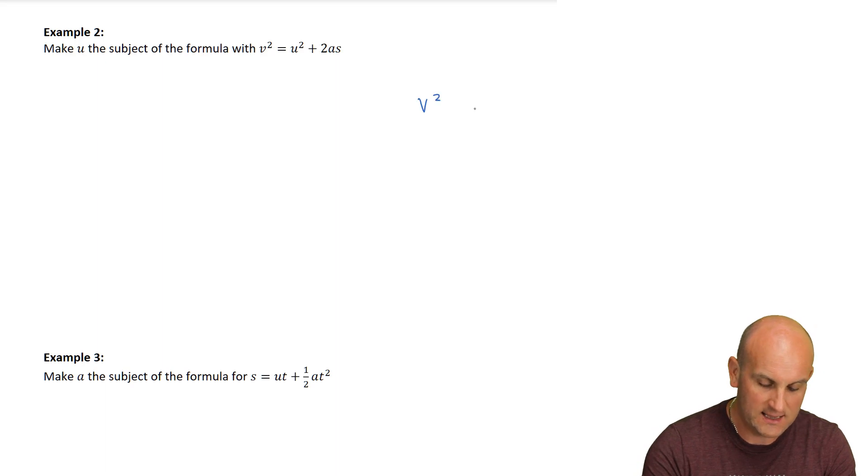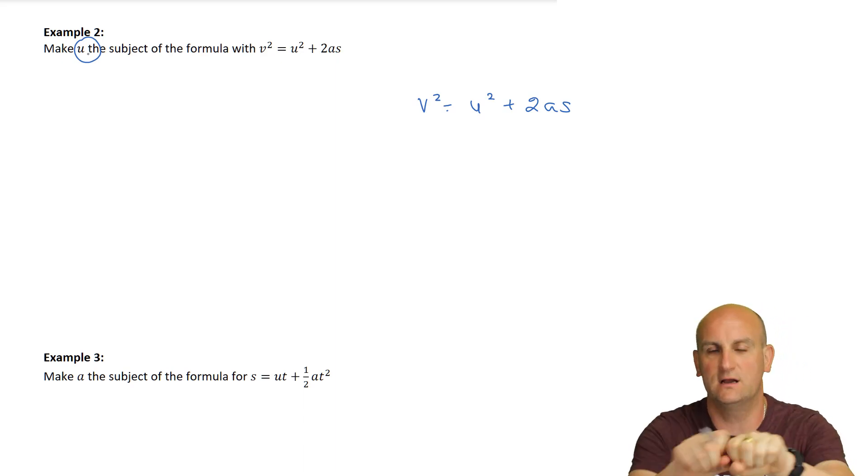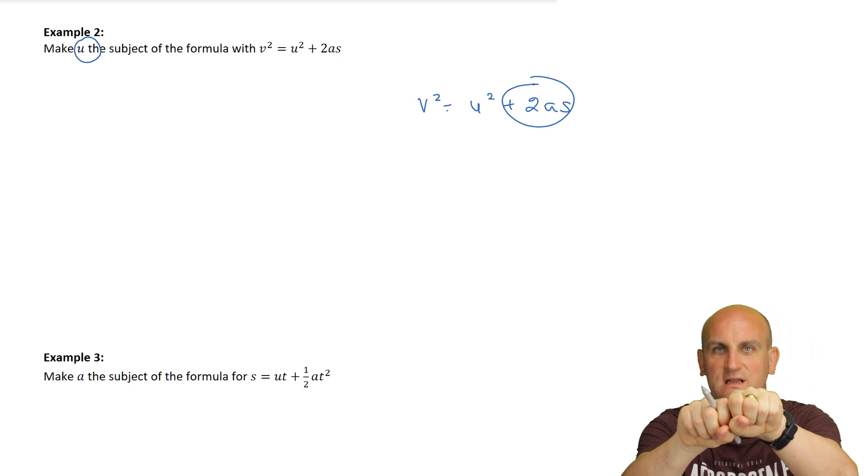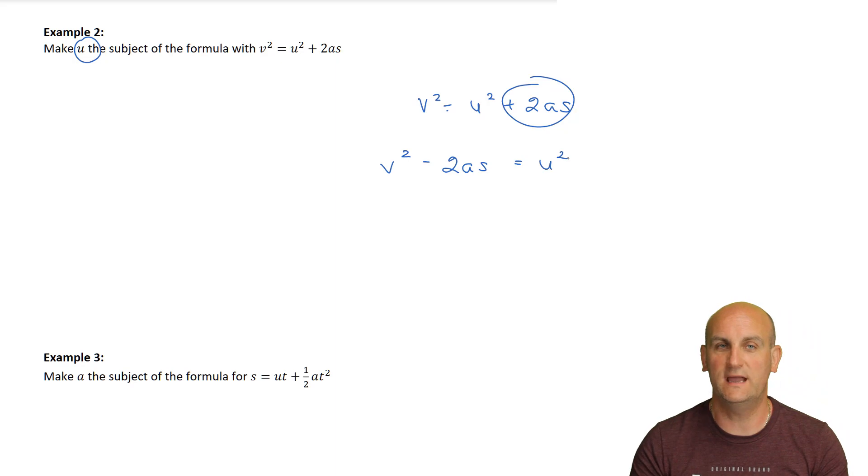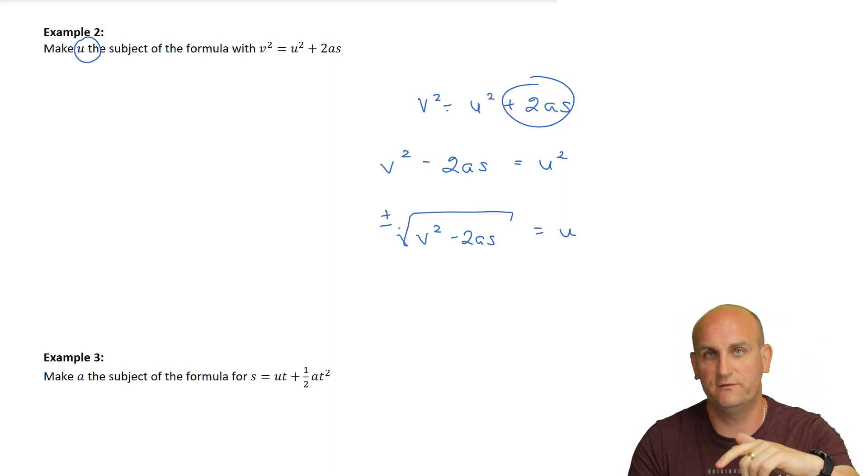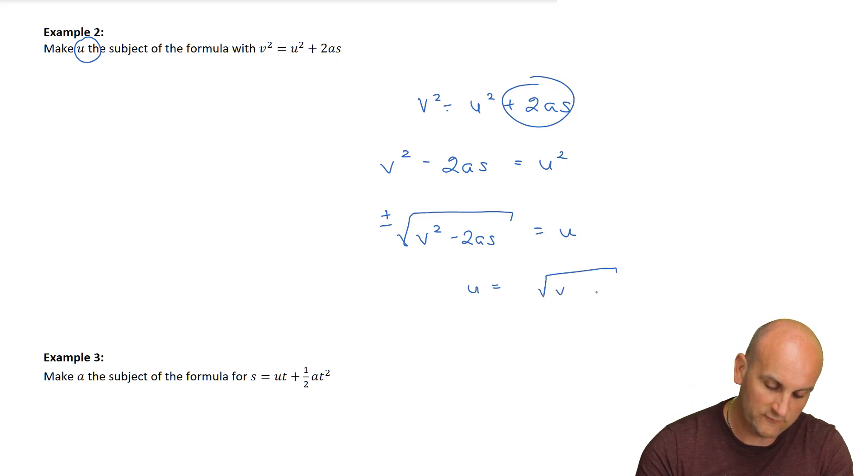Example two, we've got V squared is equal to U squared plus 2 AS. And what does it want? It wants to make U the subject of the formula. Right. Well, there's nothing really stuck to the U other than that squared sign. So what am I going to do? I'm going to have to move the plus 2 AS. Well, they're all times together so I can move them all together and I'm going to subtract 2 AS from both sides. So we get V squared minus 2 AS is equal to U squared. How do I undo a square? A square root. So I now get the square root of V squared minus 2 AS is equal to U. But word of warning, you have to put the positive and negative because when you square root something, there can be a positive solution and there can be a negative solution. It's important to write that or unfortunately, the answer is wrong.